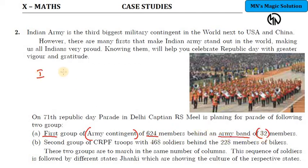So first group, in the front are 32 members. Behind them, 624 members should have to go. The second group, it is CRPF troops.